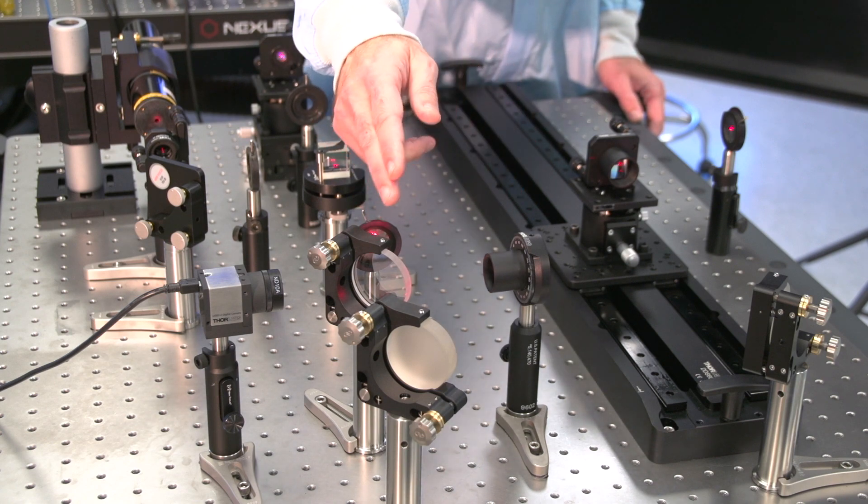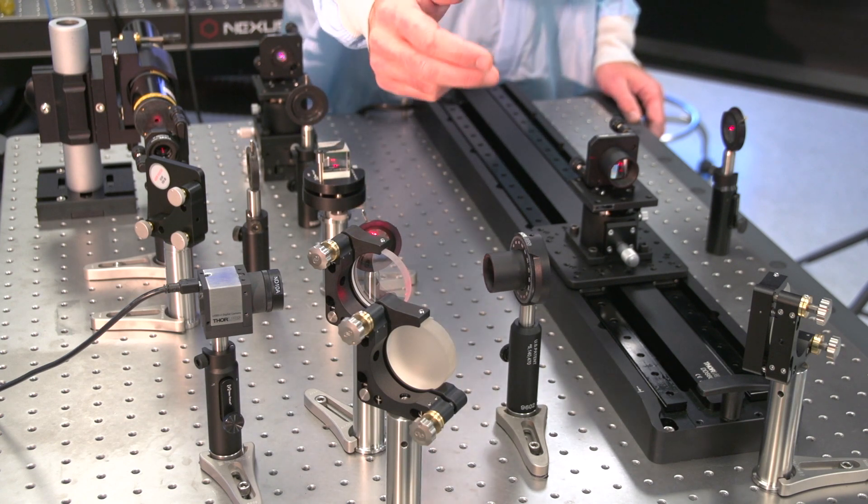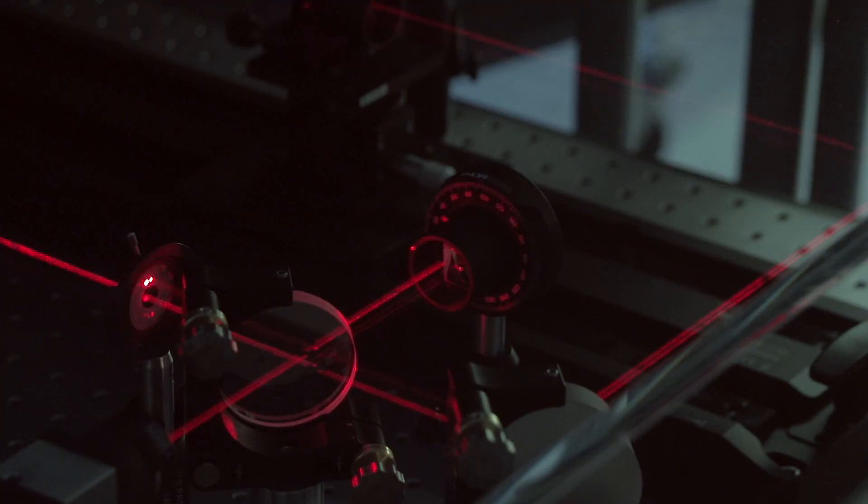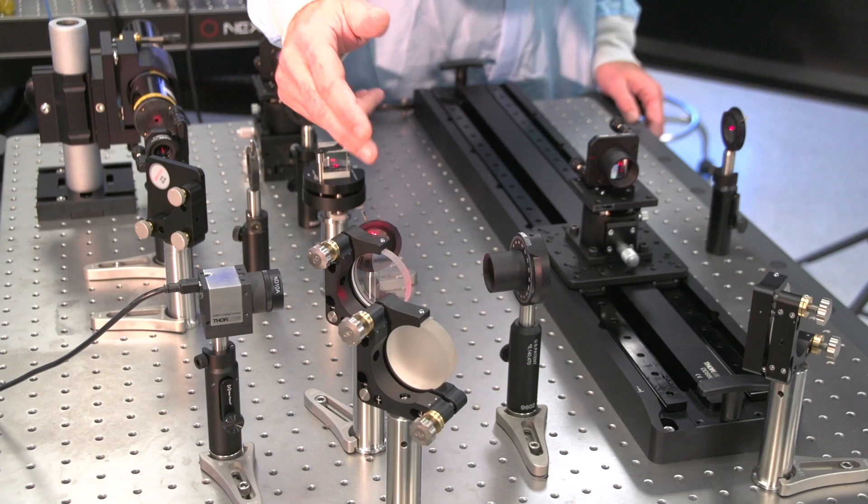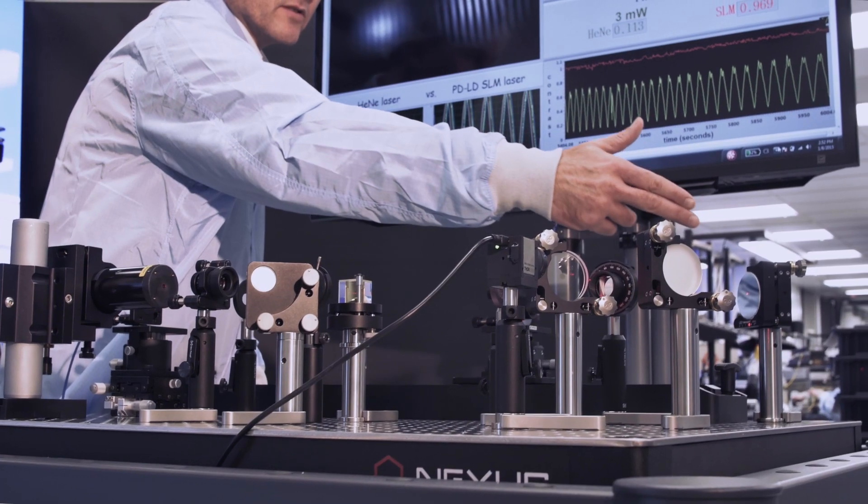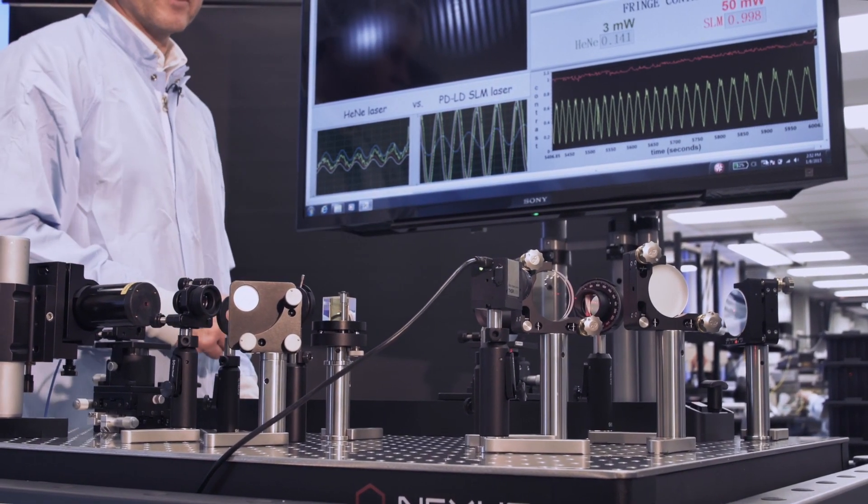This is the short arm of Michelson interferometer. The light is reflected by this prism and goes to the camera. The long arm is folded with these two mirrors and then is reflected back by this prism.